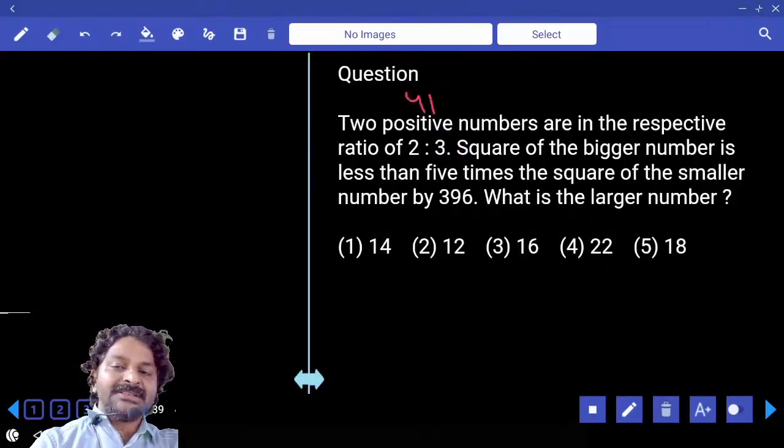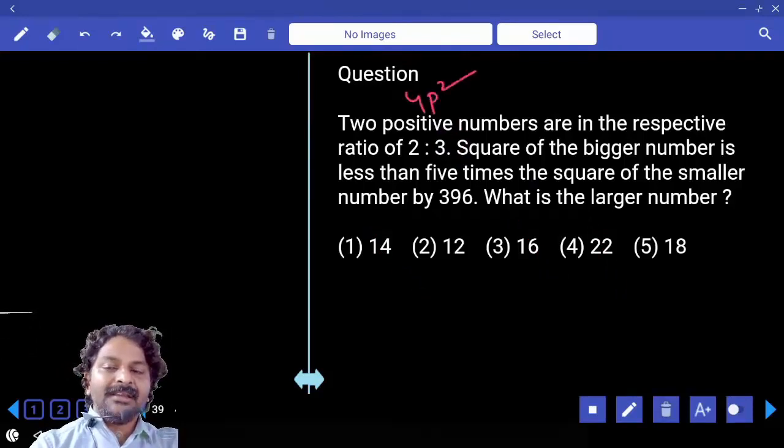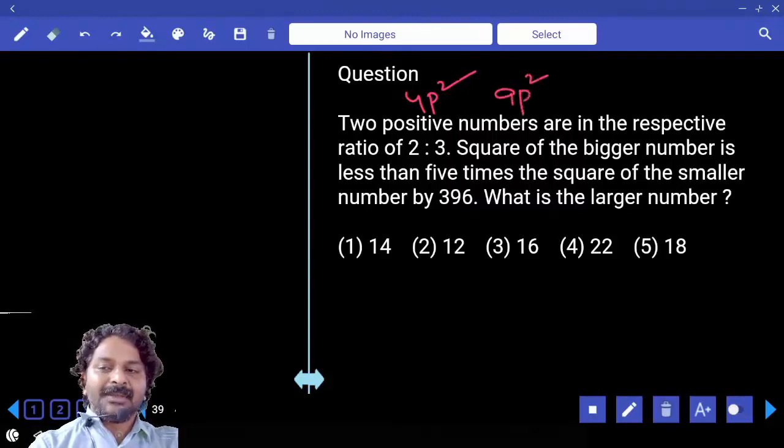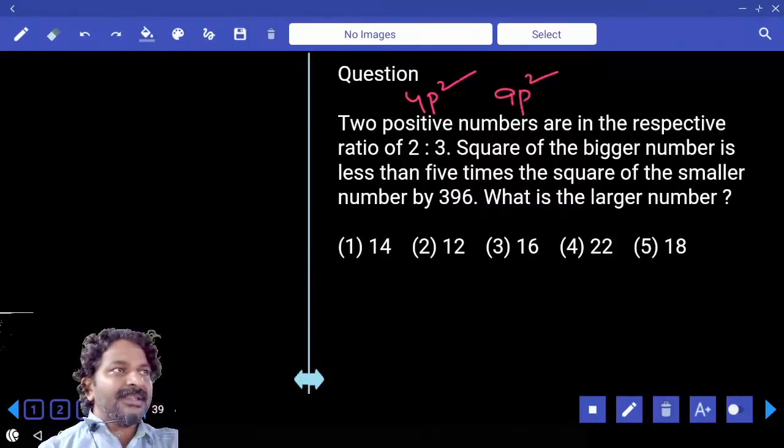Square of the first number is 4p². Square of the second number is 9p². Because first number is 2 parts, second number is 3 parts. When you square, you get p².